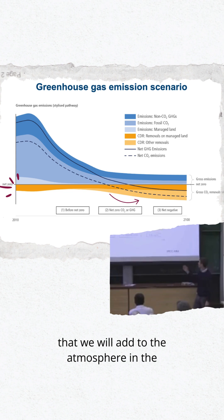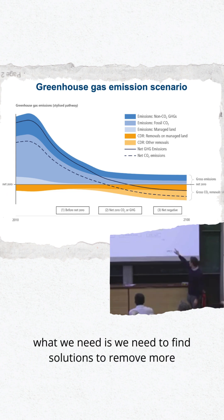We clearly have to do that. But we also need to remove greenhouse gases that are already in the atmosphere and that we will add to the atmosphere in the coming years. That's the orange. Effectively what we need is to find solutions to remove more greenhouse gases from the atmosphere.